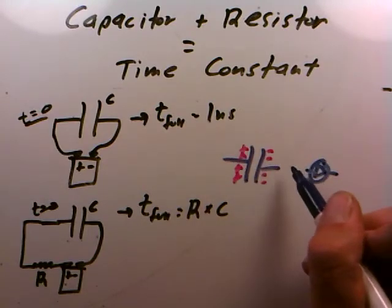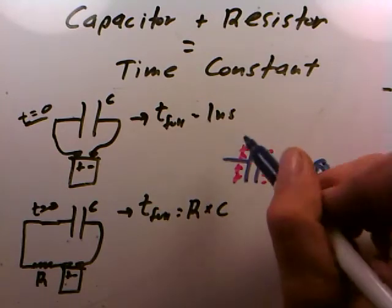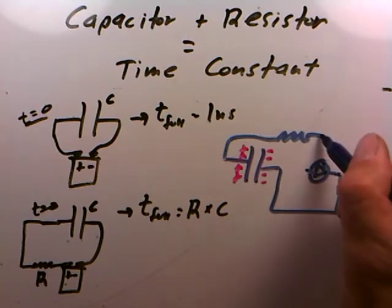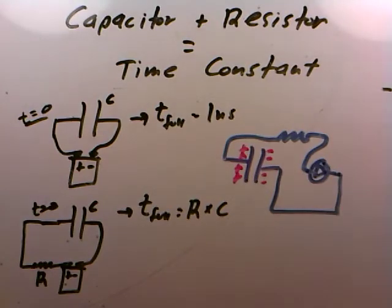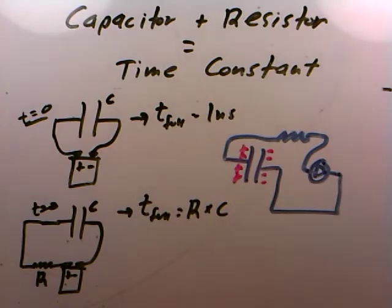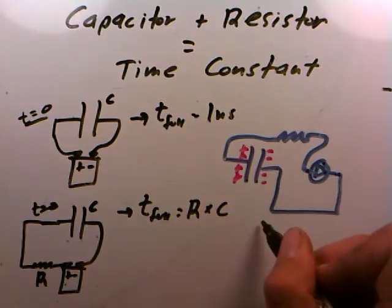So you could certainly connect the negative side to the negative side of the LED, and if you connected the positive terminal through a resistor to the positive terminal of the LED, the question is how long would it take for all this charge to be used up by the LED? It's the same sort of question and the answer is the same.